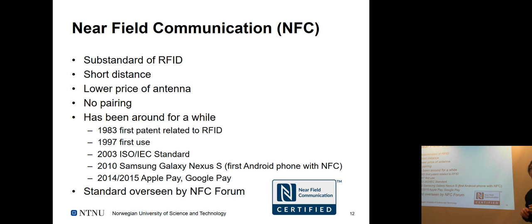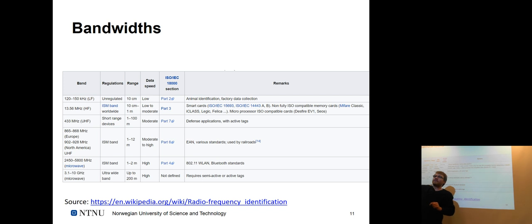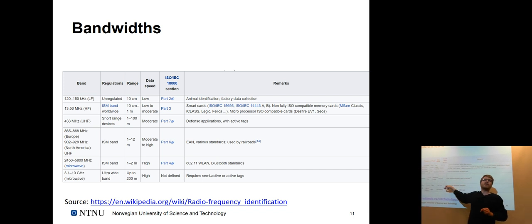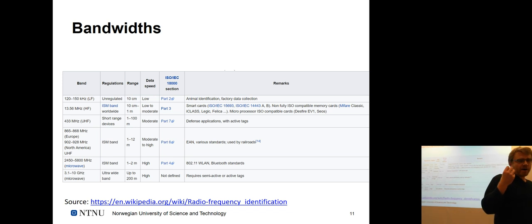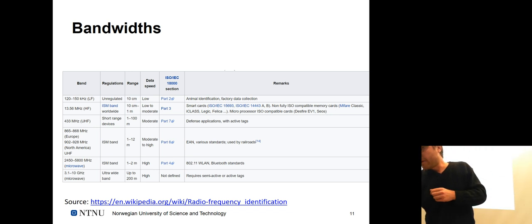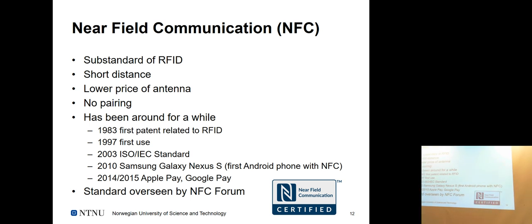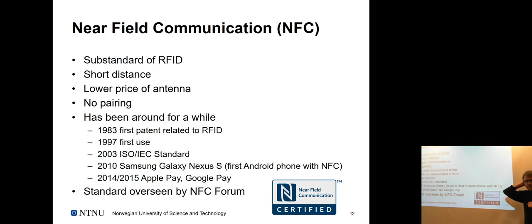More range means more power, which also implies more battery consumption. Wireless LAN in the 2.4 GHz band is expensive to run on a mobile phone. NFC minimizes that need by focusing on short distances, low cost antennas, and low power consumption. Historically: the first RFID patent was in 1983, the first NFC use was in 1997, and in 2003 it became an ISO standard in its own right.